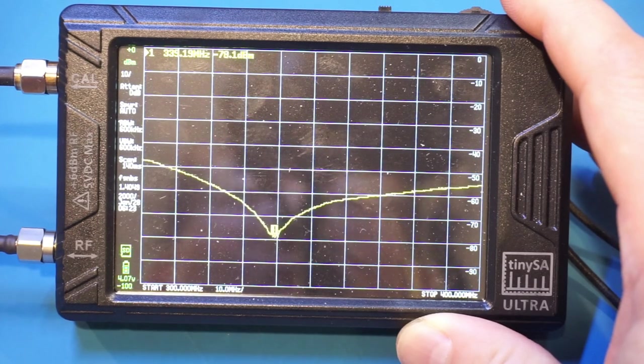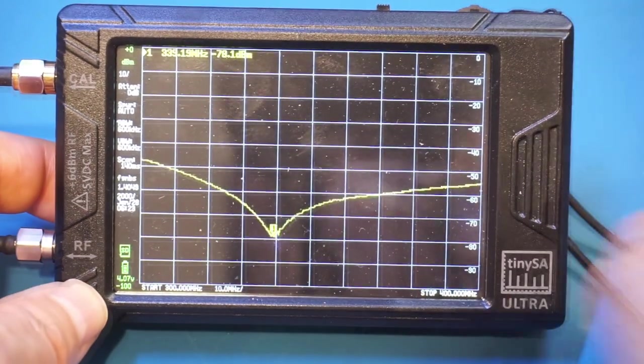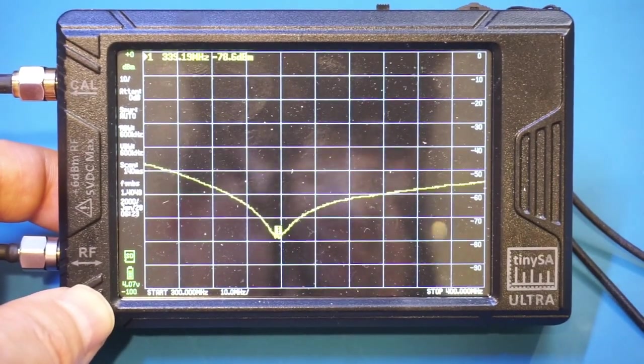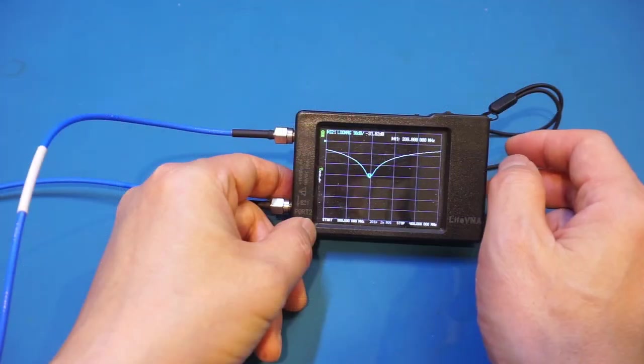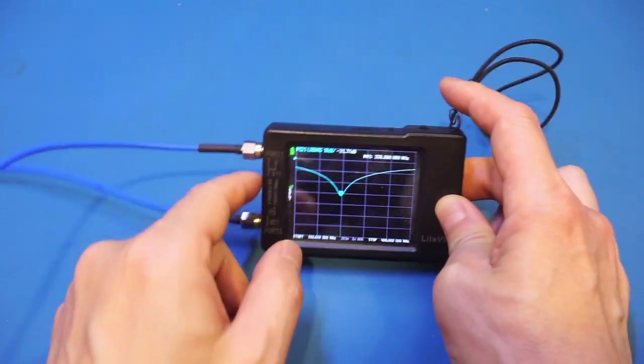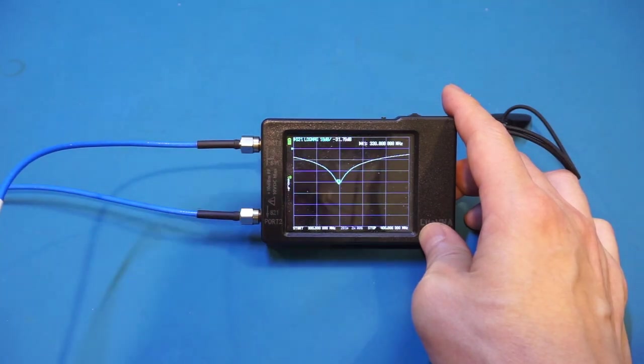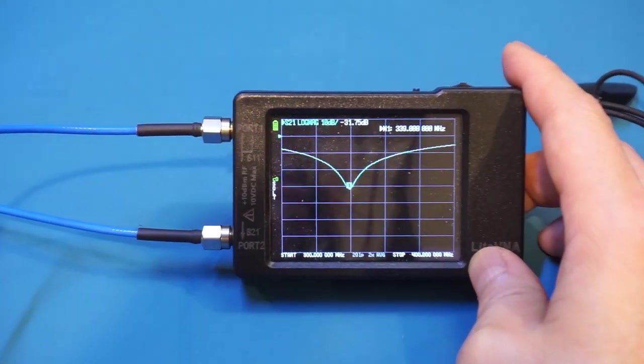So anyway, this result is actually not bad at all. And just to verify here is the same filter that we are measuring on this TinyVNA. And you can see that the center frequency also is at 339 MHz.